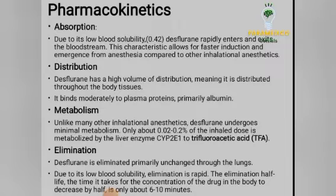Distribution: desflurane has a high volume of distribution, meaning it is distributed throughout body tissues. It binds moderately to plasma proteins, primarily albumin. Metabolism: unlike many other inhalation anesthetics, desflurane undergoes minimal metabolism — only about 0.02 to 0.2% of the inhaled dose. It is metabolized by the liver enzyme CYP2E1 to trifluoroacetic acid.